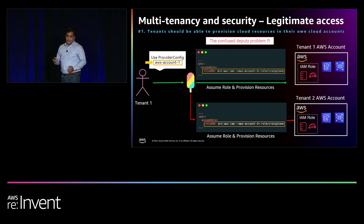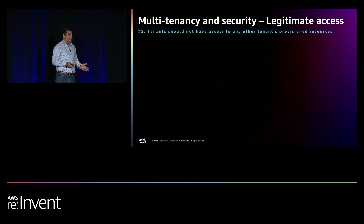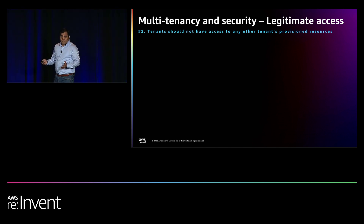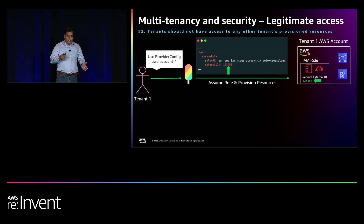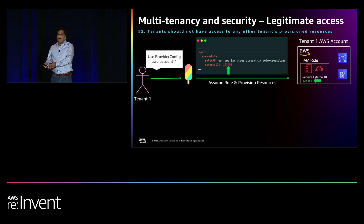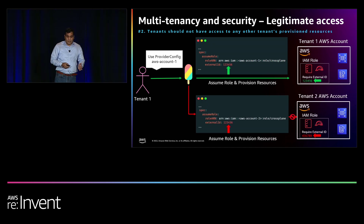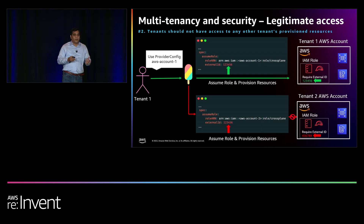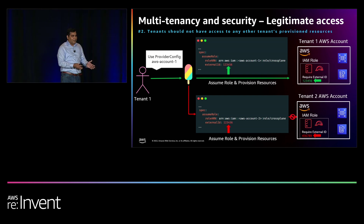To mitigate the confused deputy problem, when we onboard tenants we generate a shared secret. On the platform team side, we mention that shared secret in the external ID attribute of the provider config. On the tenant side, they configure it in the IAM role — and they can only do so if they own the AWS account and have permissions to configure IAM roles. If they don't have ownership, they may be able to specify incorrect IAM role details, but they will not be able to make Crossplane provision resources in someone else's AWS account. With the shared secret, we are not only able to relate an AWS account to a particular tenant, but also prevent exploits like the confused deputy problem.